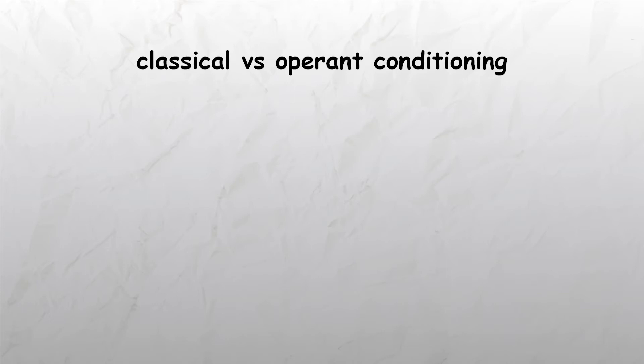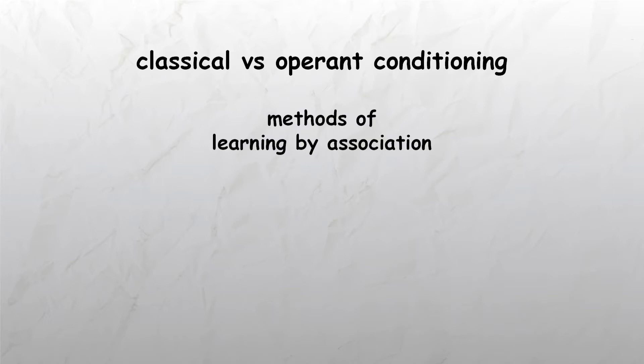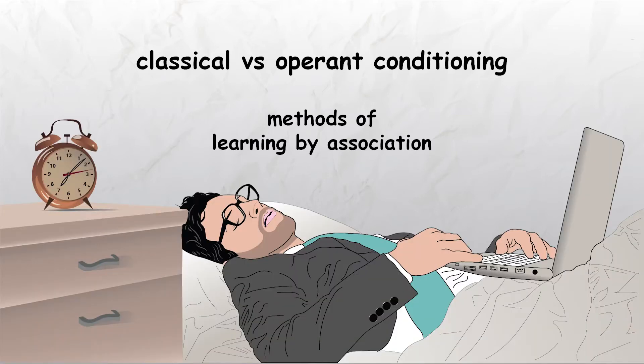What are some of the similarities between classical and operant conditioning? Both classical and operant conditioning are methods of learning by association, where behaviors are habituated or ingrained through frequent reinforcement. The two methods have mutual applications in being able to shape the behavior of both people and animals — for example, in education.